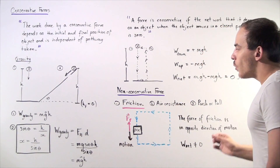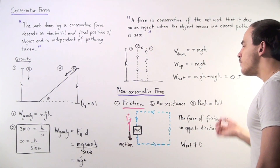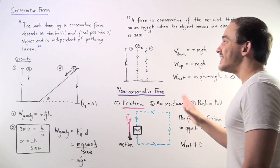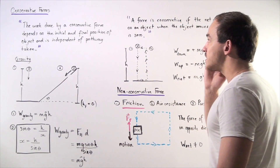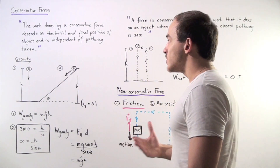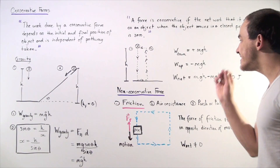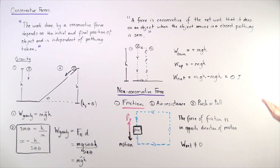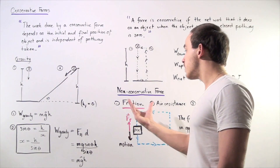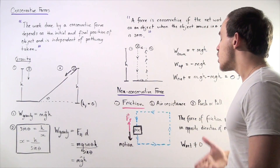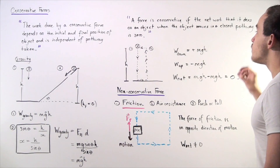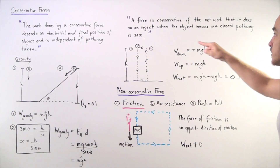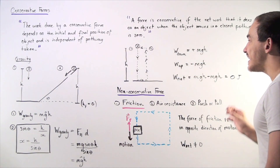What about non-conservative forces? A non-conservative force is simply a force that does not fit this definition. The work done by a non-conservative force does not depend only on the initial and final position, but also on other things such as velocity and the pathway taken. Examples include friction, air resistance, and the push or pull of a person. To show that friction is non-conservative, we have to disprove the definition — showing that when an object moves around a closed pathway, the net work done is not equal to zero.